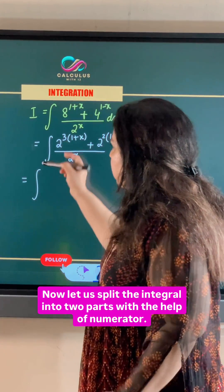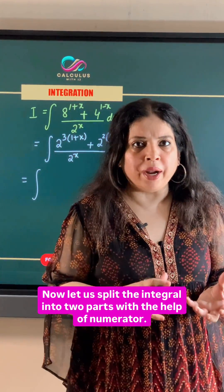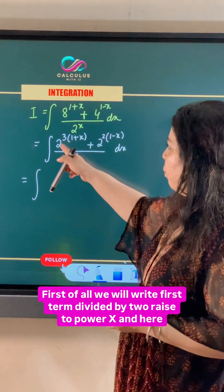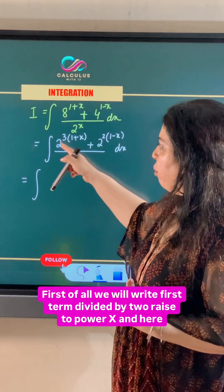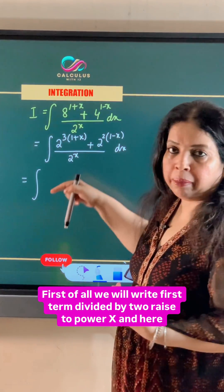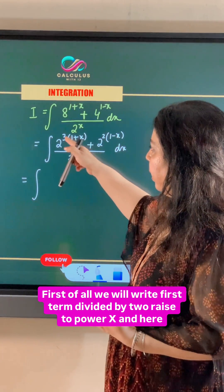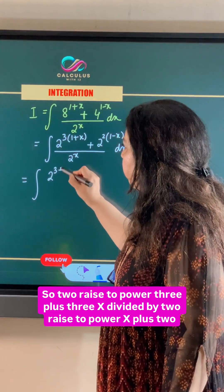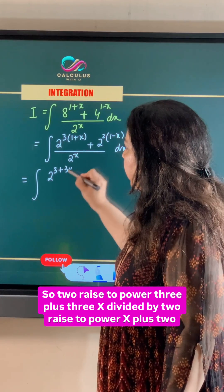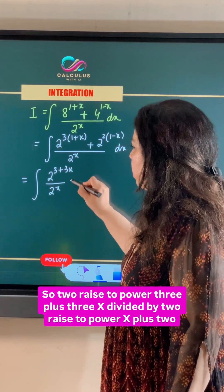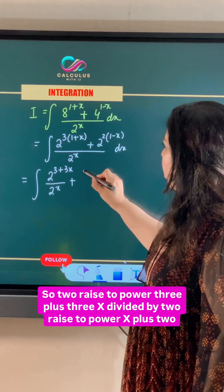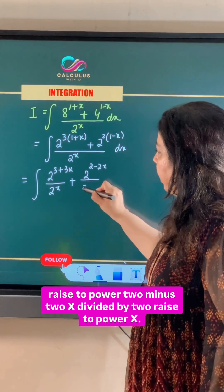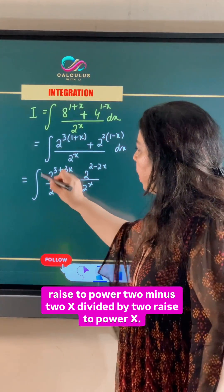Now let us split the integral into two parts with the help of the numerator. First, we write the first term divided by 2 raised to power x, and here I am also opening the bracket. So we get 2 raised to power 3 plus 3x, divided by 2 raised to power x, plus 2 raised to power 2 minus 2x, divided by 2 raised to power x.